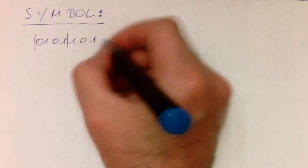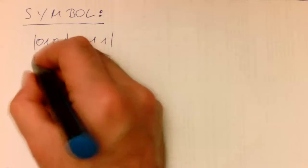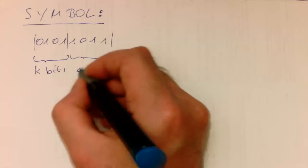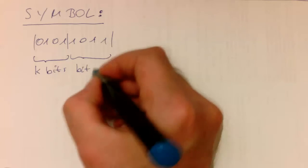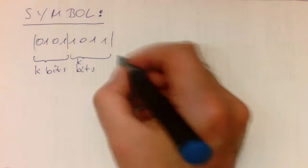And so we are creating these chunks here. And so every chunk here contains k bits. So in this case here, 4. So again, k bits, k bits, and so on and so on.